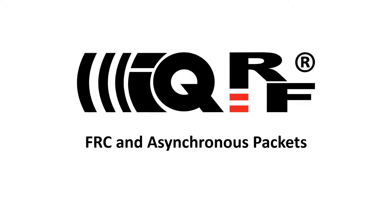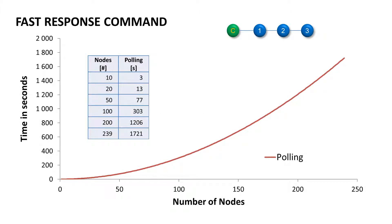Let me explain how you can collect data from the whole network effectively and how to send asynchronous packets. If you think the IQMesh protocol through, pulling data from all nodes in a network would be quite a time-consuming process. The reason is that the time grows exponentially based on the number of nodes you need to read data from. As you can see on the chart, when you pull data from 10 nodes it takes 3 seconds, from 100 nodes it takes already 5 minutes, and in the case of 239 nodes it's almost half an hour. In this time period the network cannot be used for anything else, so this could dramatically limit real usability of your network.